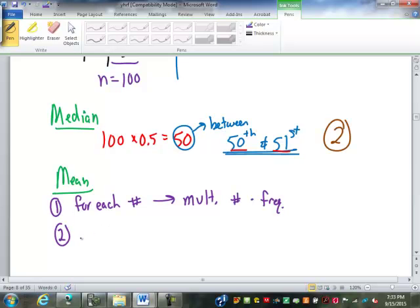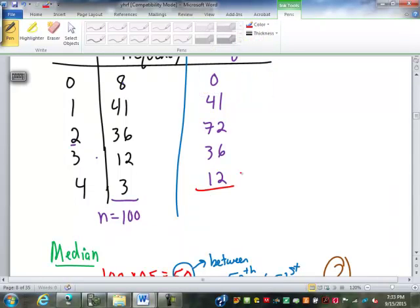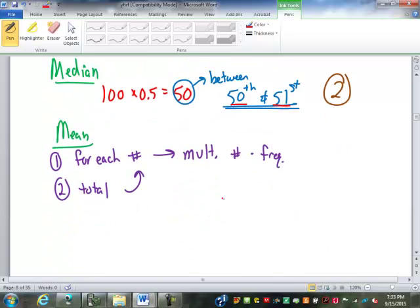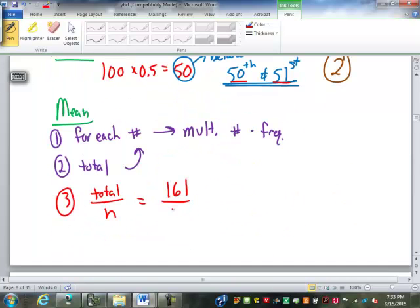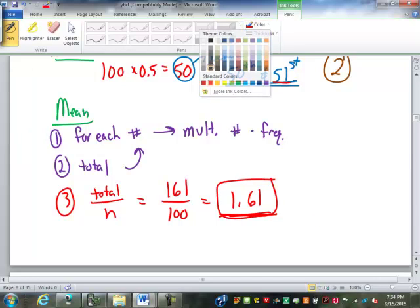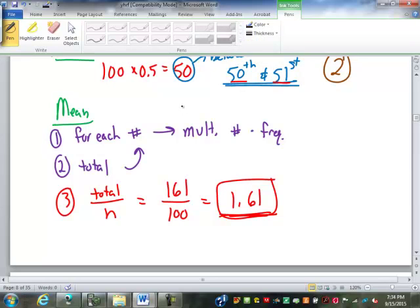The second step in the mean is I want to find the total of this column. So I'm adding those up. 0, 41, 113, 149, 161. So that adds up to be 161 is the total of that column. The third step in finding the mean is divide that total by n. So 161, we already found n to be 100 here. So 161 divided by 100 is 1.61. The mean number of cars owned per household is 1.61. Any questions on there?